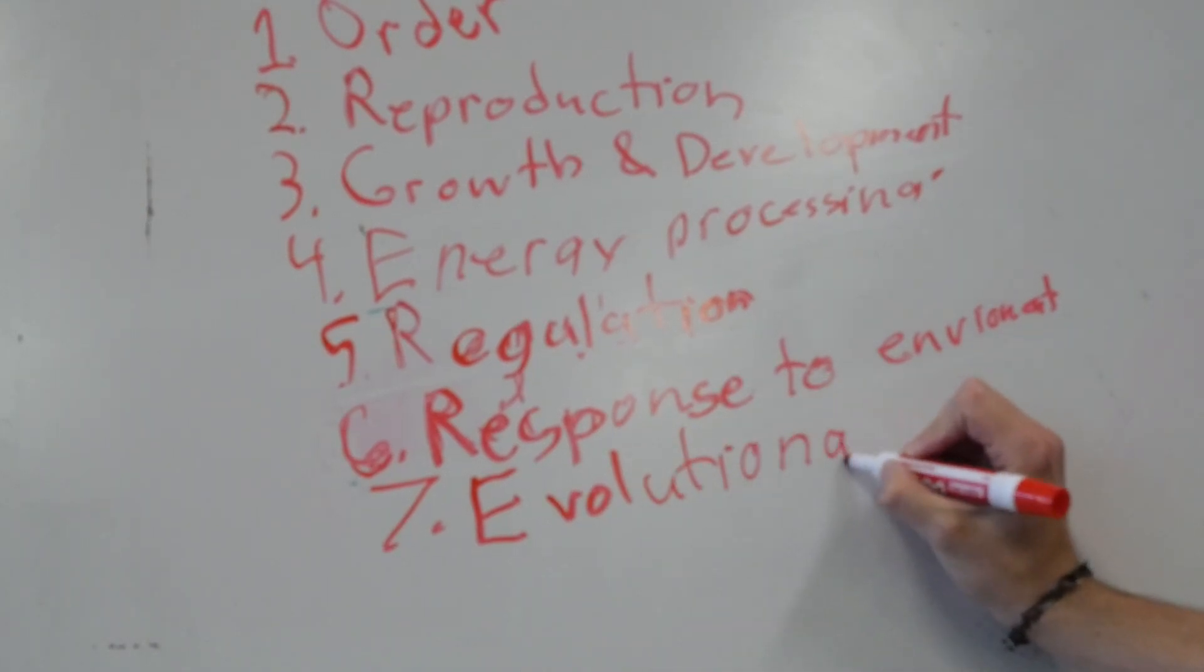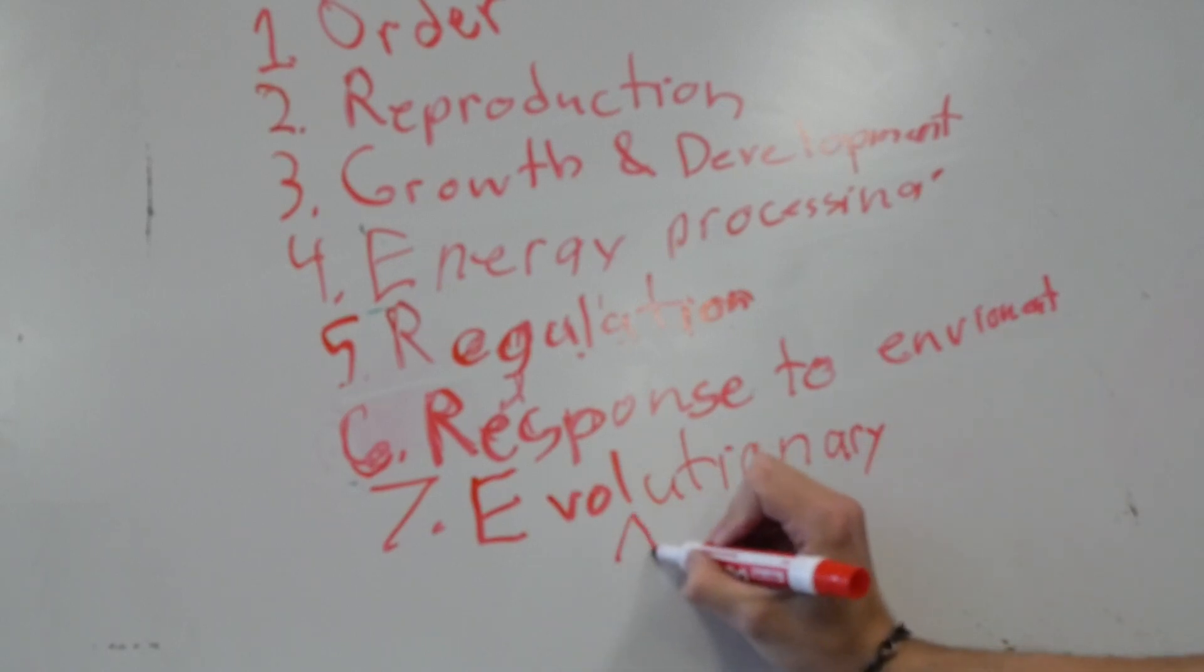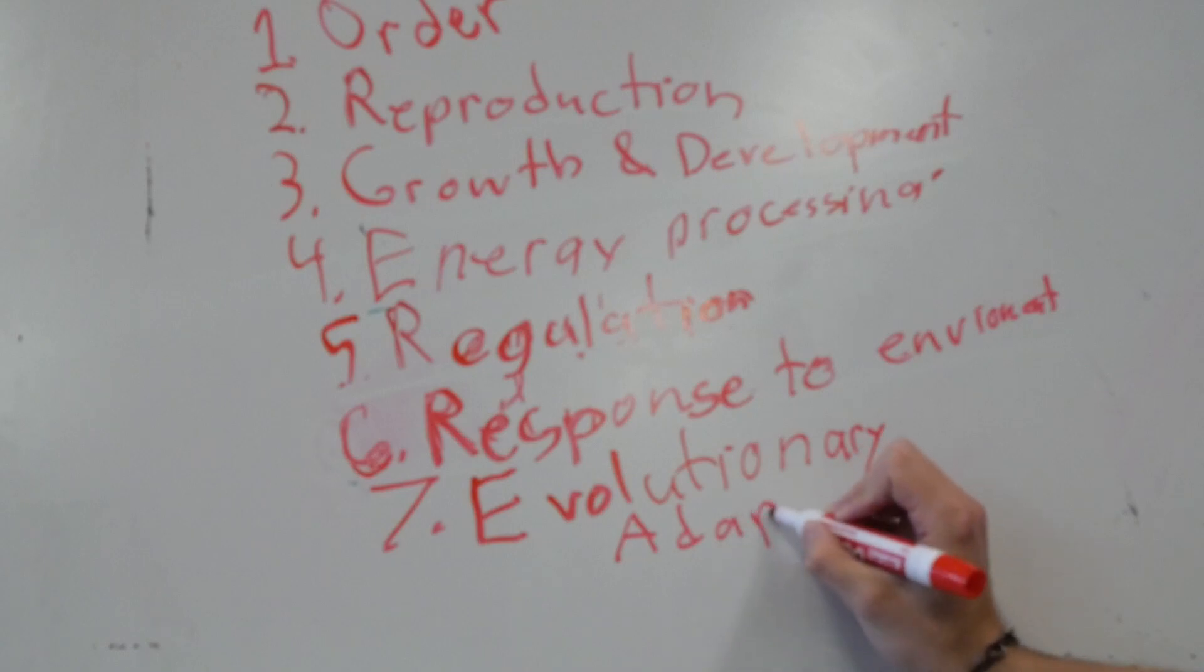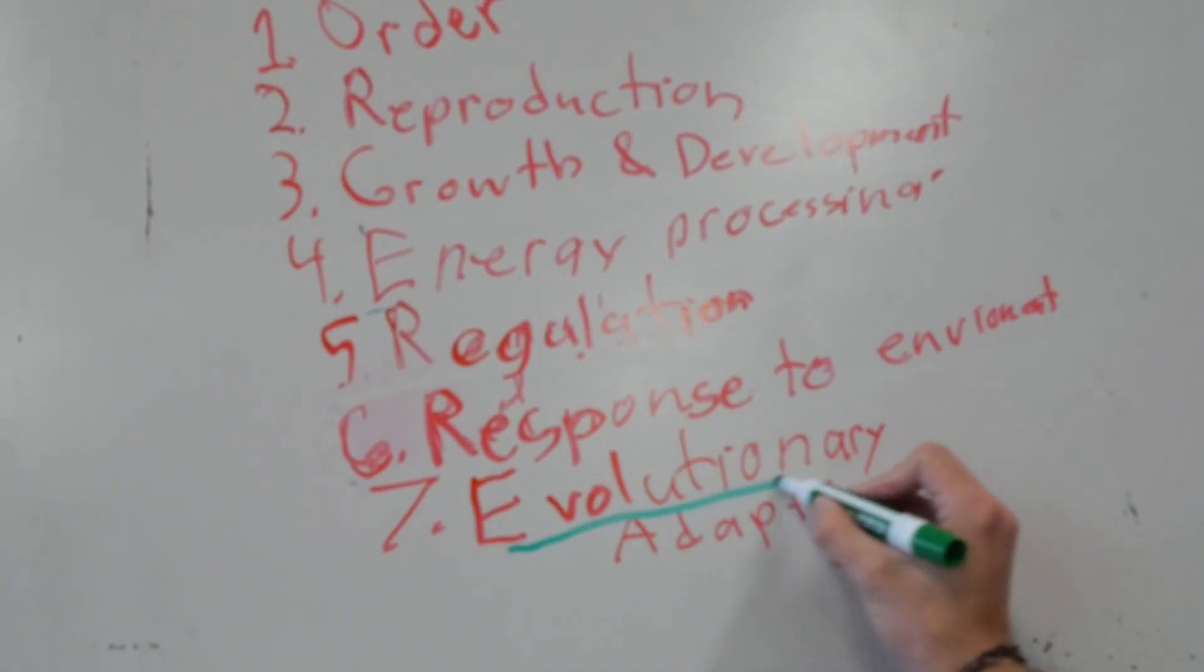The final principle is the principle of evolutionary adaptation. This one is definitely more of a species-oriented principle than an individual-oriented principle. Species evolve over generations. One person is not generations.